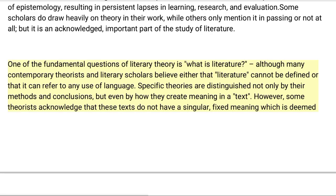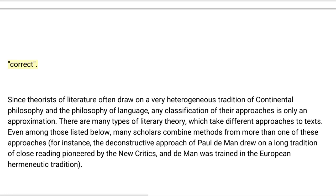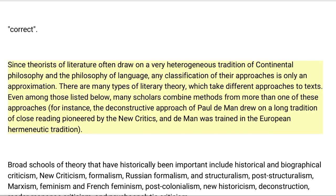One of the fundamental questions of literary theory is: what is literature? Although many contemporary theorists and literary scholars believe either that literature cannot be defined or that it can refer to any use of language, specific theories are distinguished not only by their methods and conclusions but even by how they create meaning in a text. Some theorists acknowledge that these texts do not have a singular fixed meaning which is deemed correct. Since theorists of literature often draw on a very heterogeneous tradition of continental philosophy and the philosophy of language, any classification of their approaches is only an approximation.